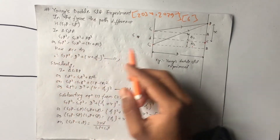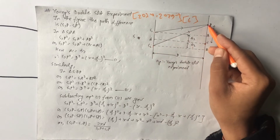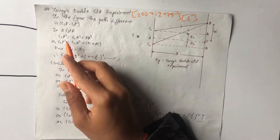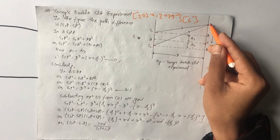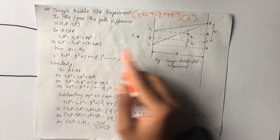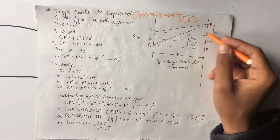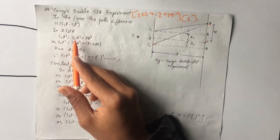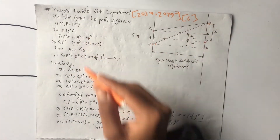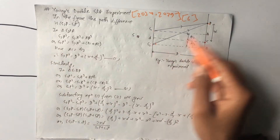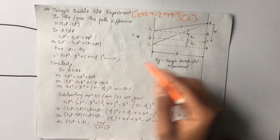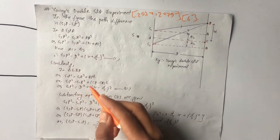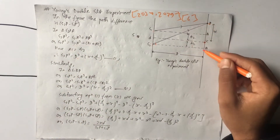By Pythagoras theorem, S2P squared is equal to S2A squared plus AP squared. Here S2A equals d, so S2P squared equals d squared plus AP squared.